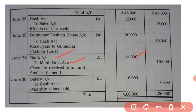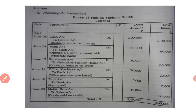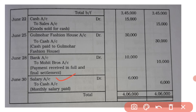When goods were sold to Mohit Brothers, the amount is received on June 28 in full settlement. Last transaction of the month, June 30: salary paid in cash 6,000. Salary is an expense, expenses are always debited. Salary account debited to cash account. Debit 6,000, credit 6,000. Narration: being monthly salary paid. After completing all transactions, write the total debit and credit amounts, which is 4,06,000 each. This completes the journalizing of all transactions.